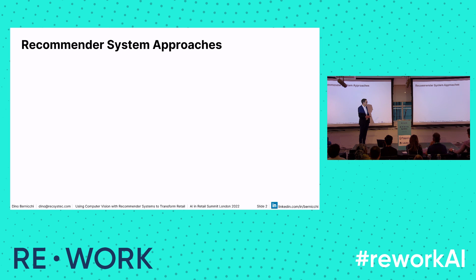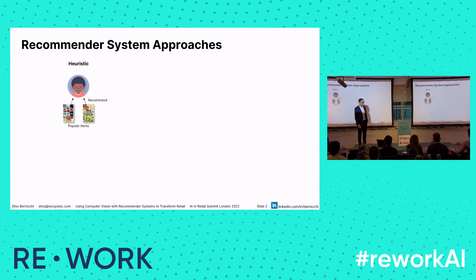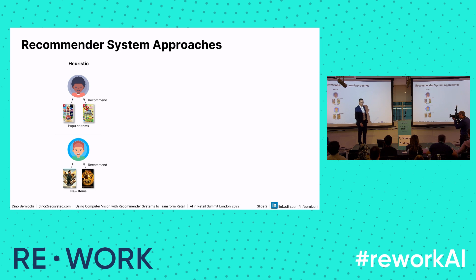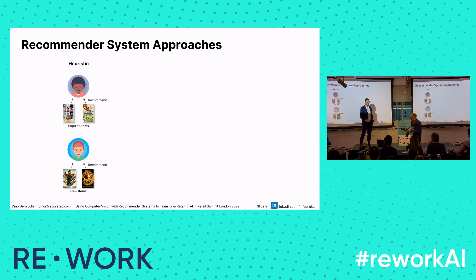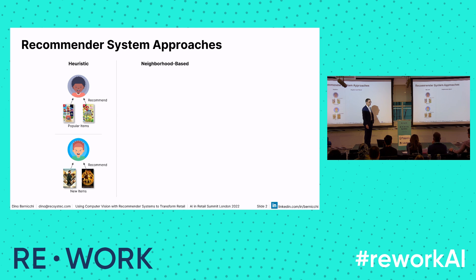Typical recommender systems — you've got your heuristic approaches: popular products or new products. You recommend those to customers, and it's a good starting point for a lot of retailers because they don't have something already, so it's a good place to start.